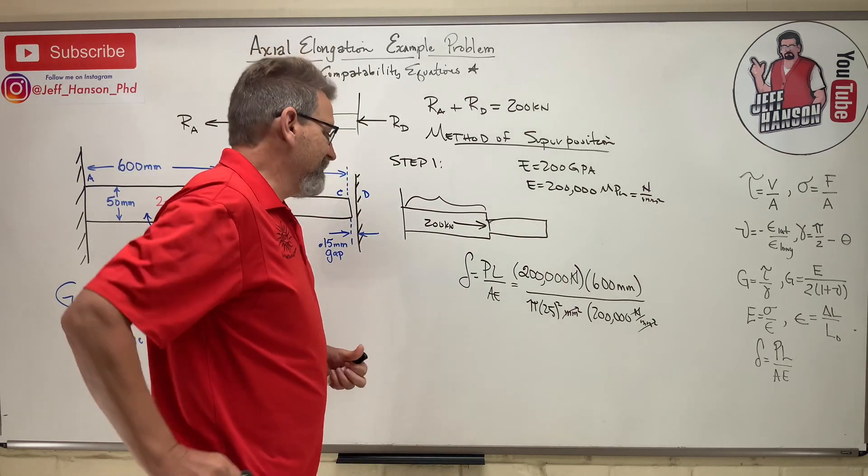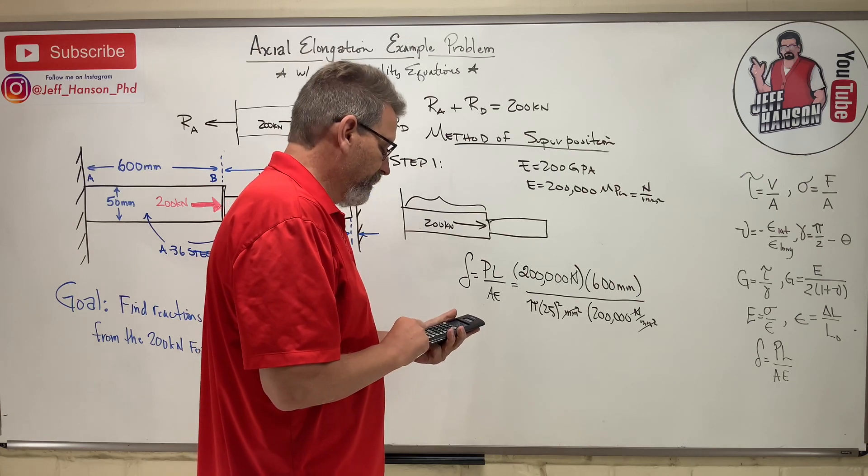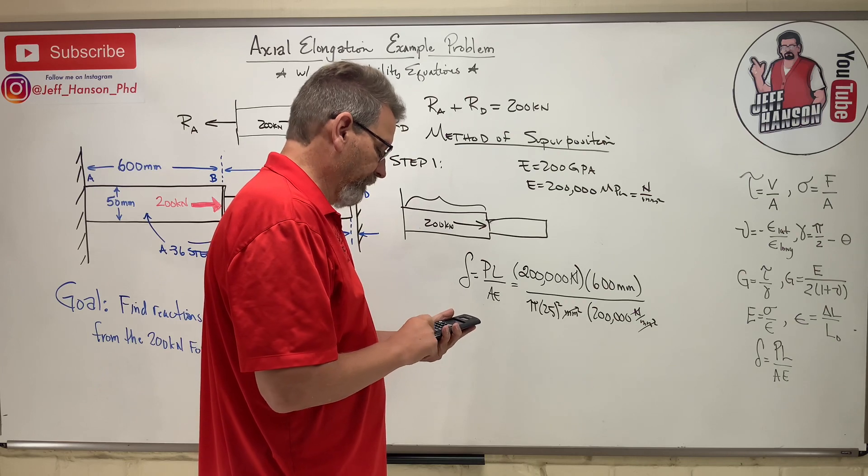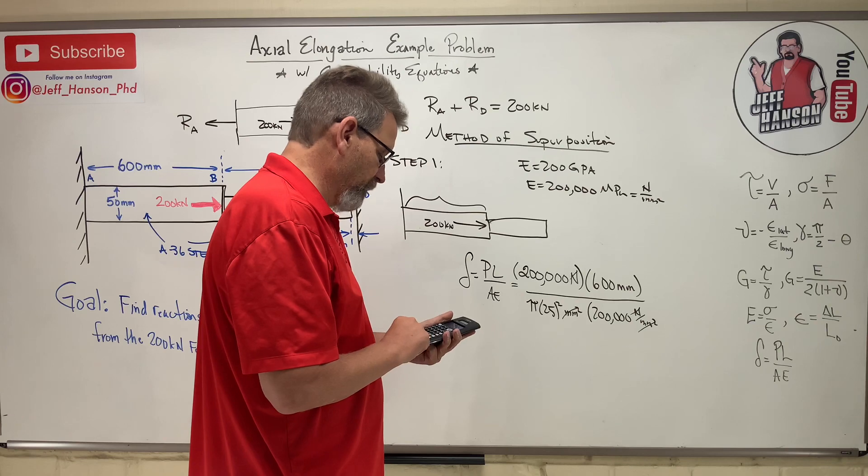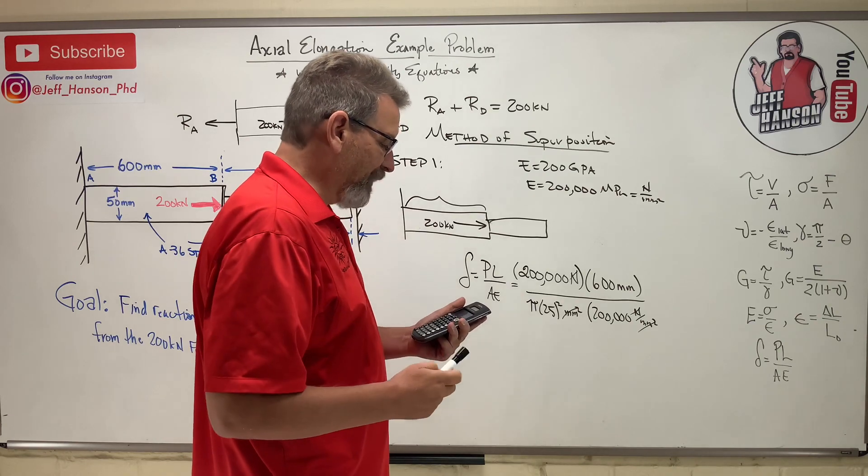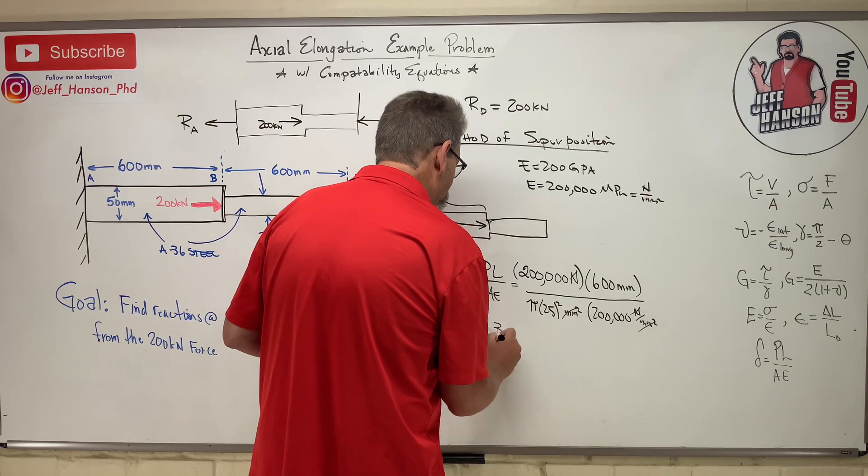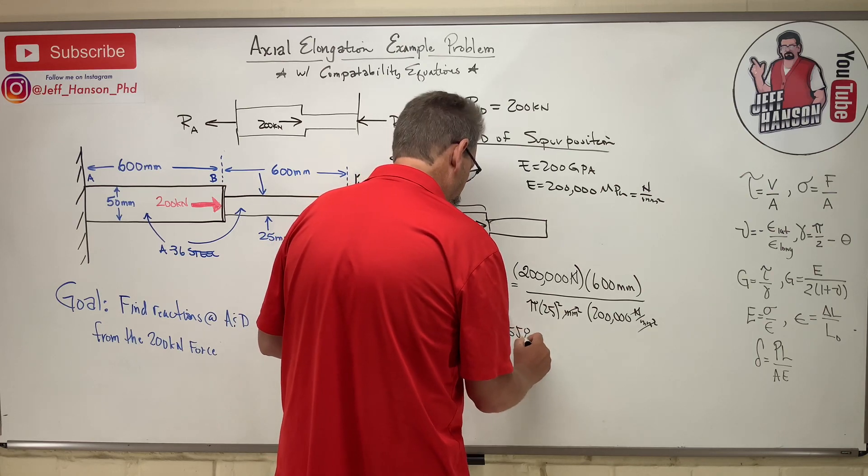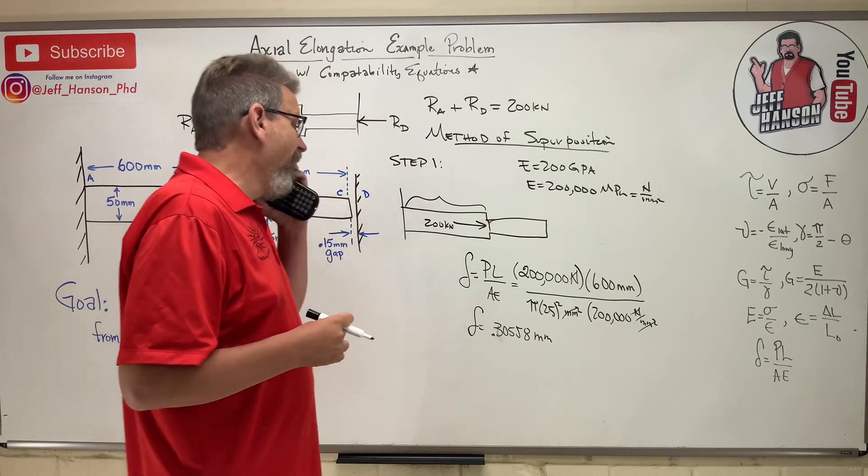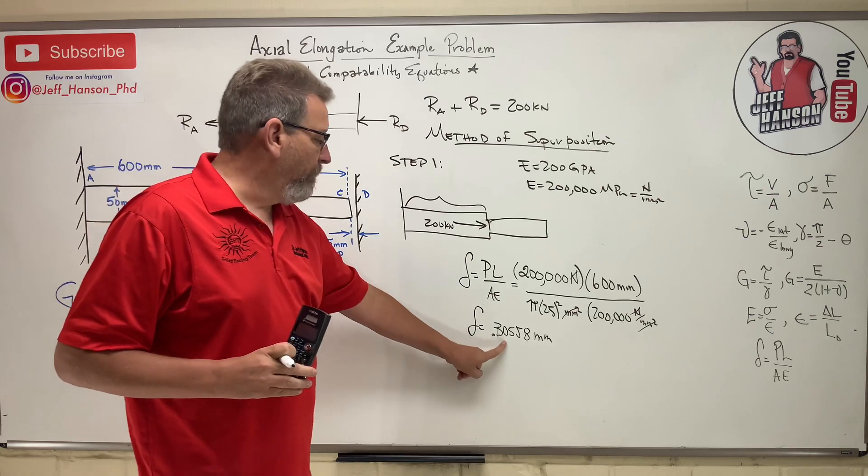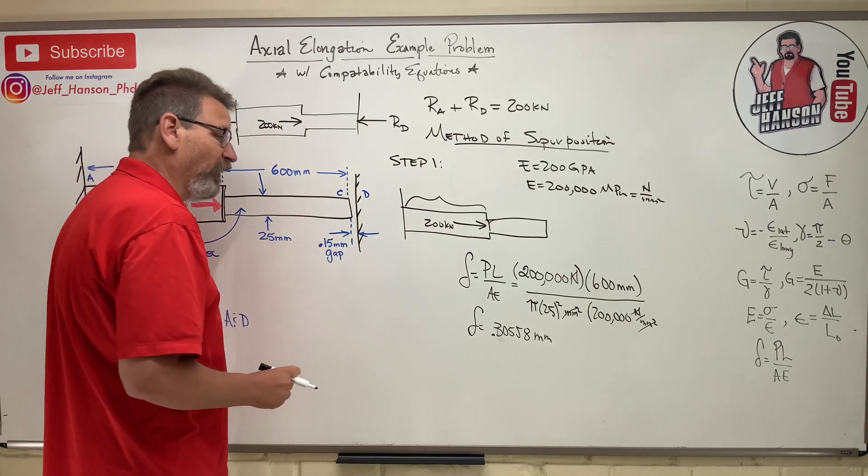All right, let's put it in our calculator and see what we get. All right, here we go. 200,000 times 600 equals divided by pi equals divided by 25 squared equals divided by 200,000 equals 0.30558. So delta is going to equal 0.30558. And it's okay to carry extra decimals. We'll round at the end. I like carrying lots of decimals and then rounding at the very end. So we've let this thing grow, and it grew 0.30558. Is that going to close the gap? Yeah, all right? Yes, it is. It's going to close the gap because the gap was only 0.15.